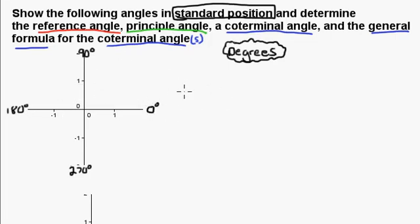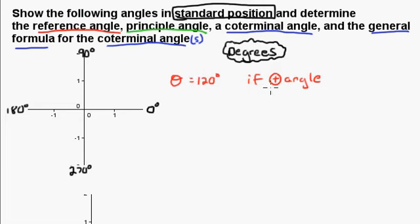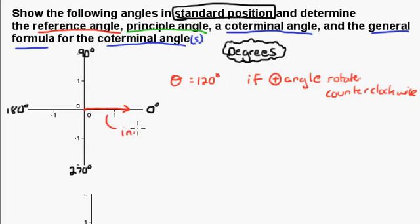The first angle we're going to do is theta equals 120 degrees. If the angle is positive — which in this case it is, because this is positive 120 — then you're going to rotate your arm counterclockwise. Our arm always starts at the initial arm position. The values like negative 1 and 1 on the axes don't really matter at this point; later we'll do the unit circle where they do matter.